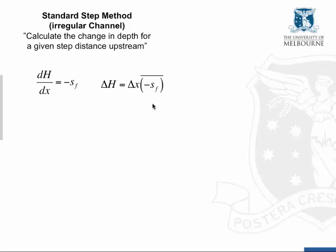We rewrite the expression so that the change in total head equals some distance times the energy gradient, where the energy gradient is the average over the reach — calculated from values at the upstream and downstream ends of the step. You set the cross-section spacing, calculate the energy gradient at each end based on a guessed water level at the upstream end, and adjust that level until the average energy gradient times the distance equals the change in total energy over the reach.